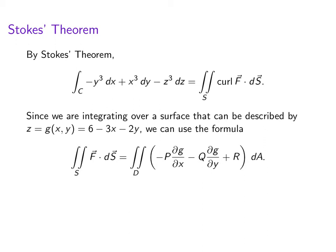P, Q, and R are the components of the field that we're integrating. Remember that we're integrating curl of F, and that had 0 components for the first two components. So the only thing we're going to integrate is the last component.